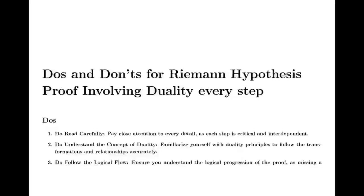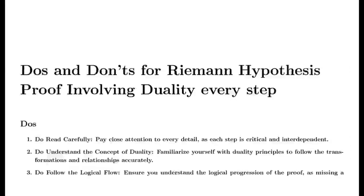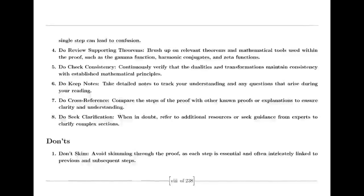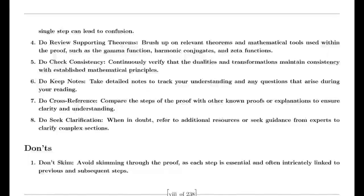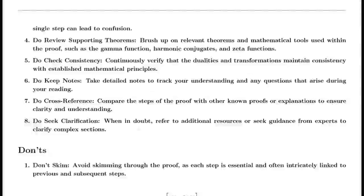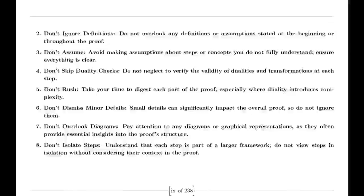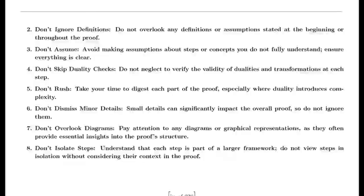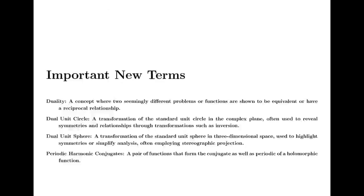Euler also tackled the Basel problem, concerned with finding the exact sum of the reciprocals of the squares of the integers. By examining the sine function and its product representation, Euler derived a formula for this sum, showing that it equals π²/6. This result was a significant achievement in mathematics and highlighted Euler's ability to uncover connections between different mathematical concepts.